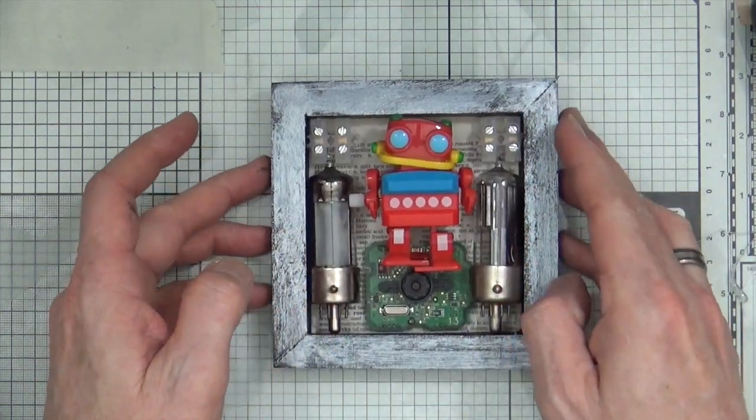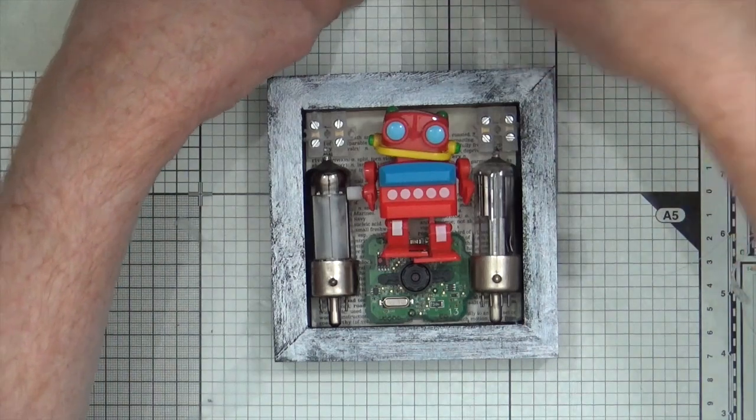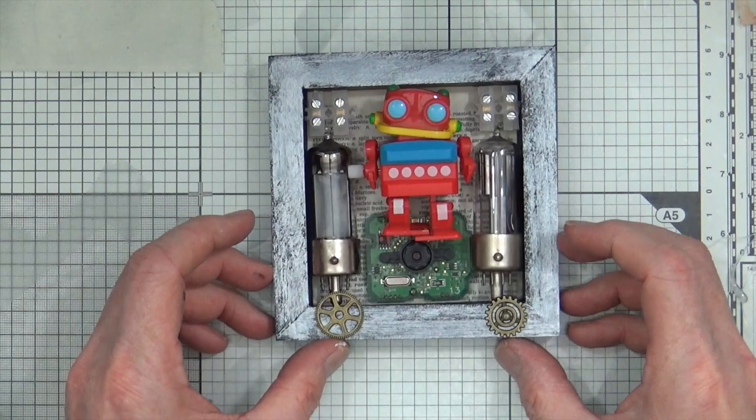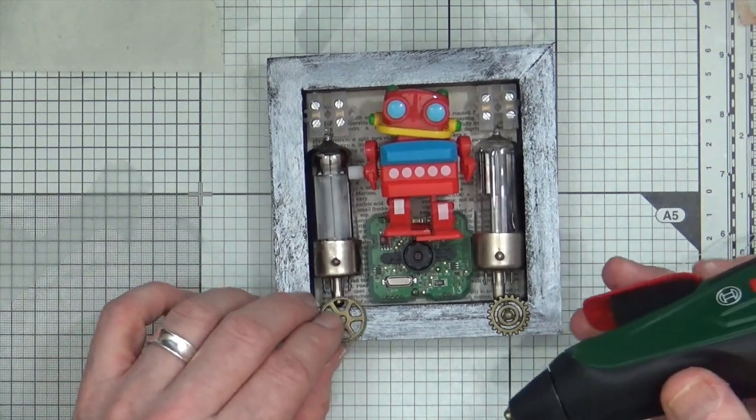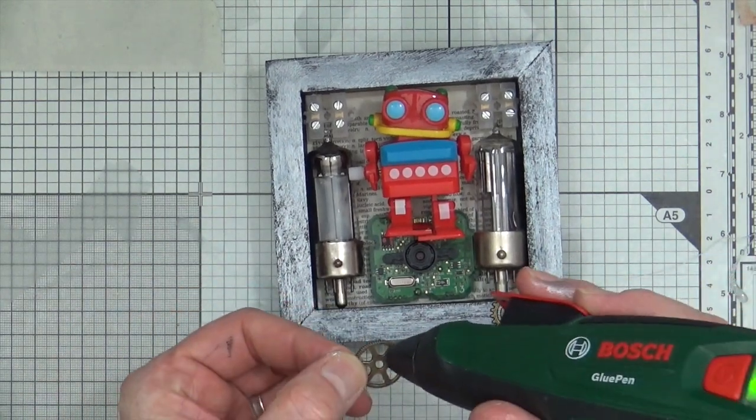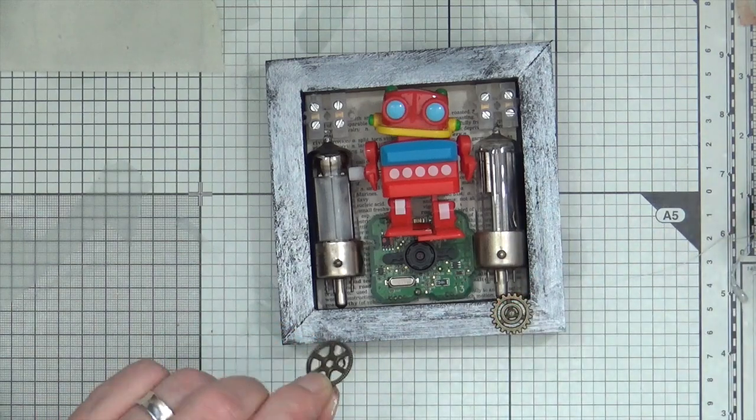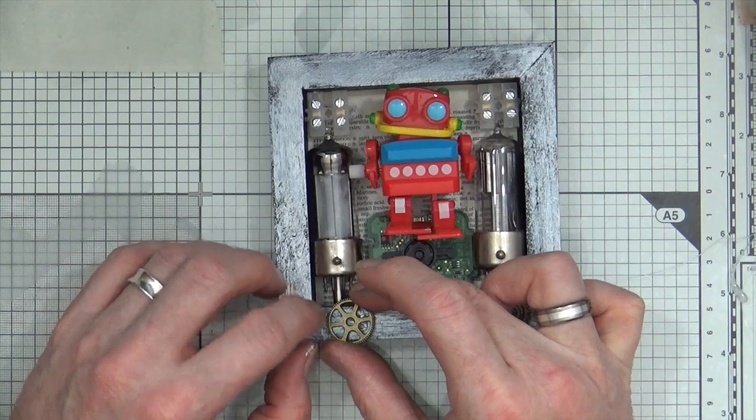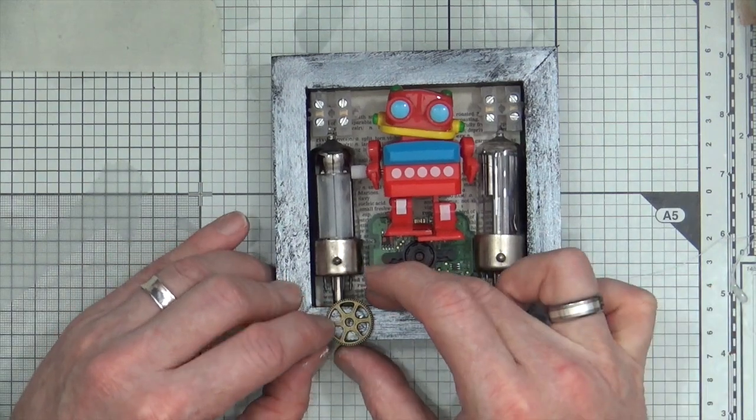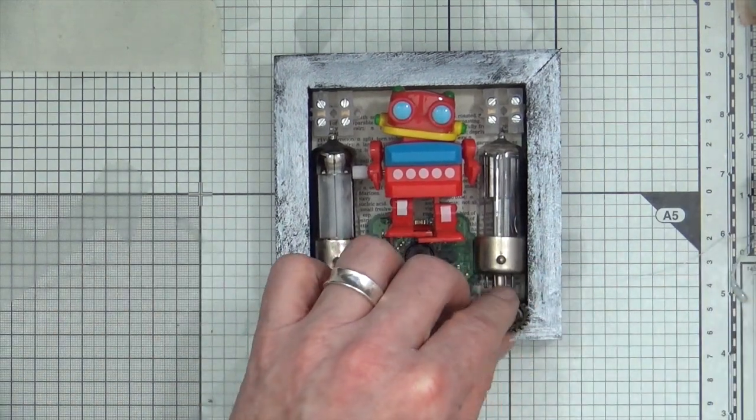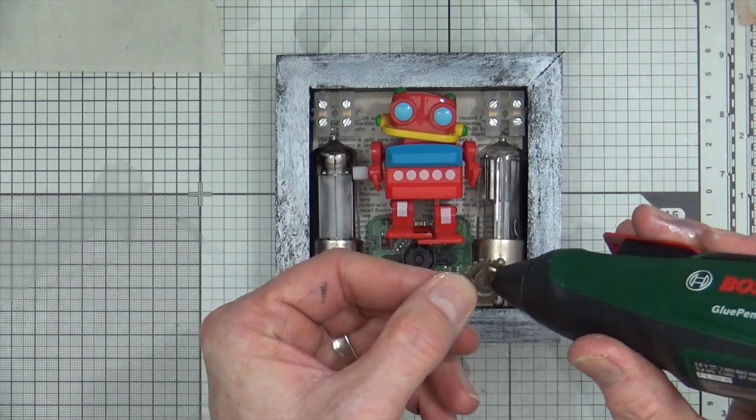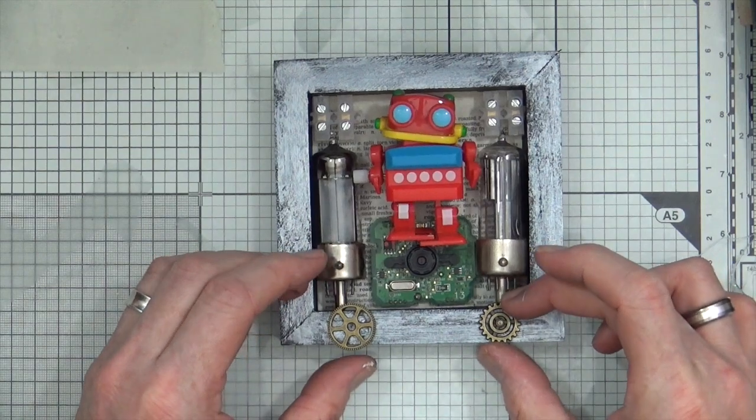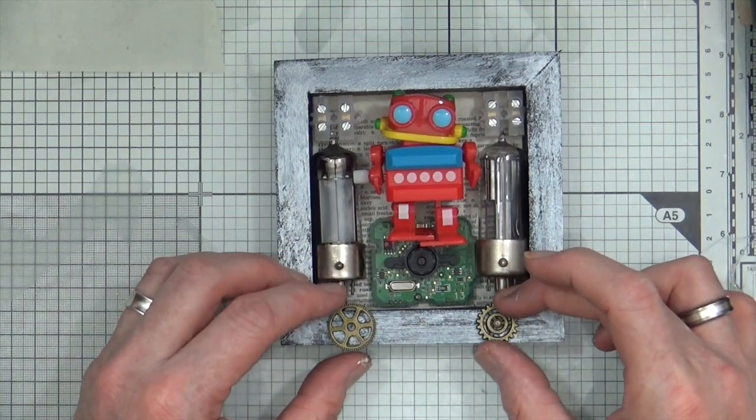Okay, next up, I'm going to just stick a couple of these little sprockets just on the bottom, so just like so. Just add a little bit of glue there. And then a little bit of glue on the back of that one, about there.